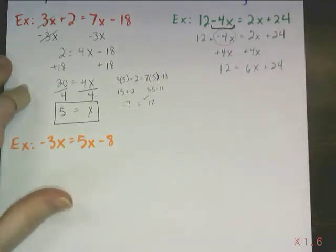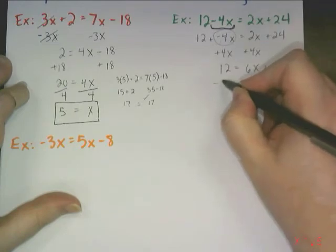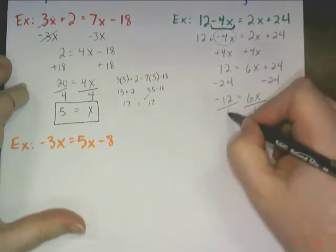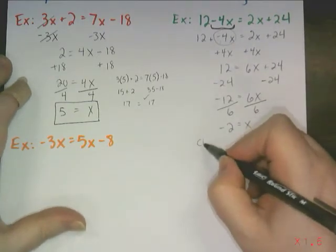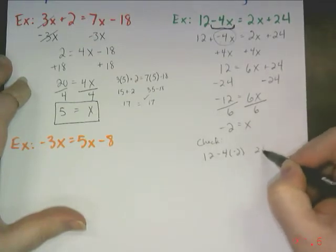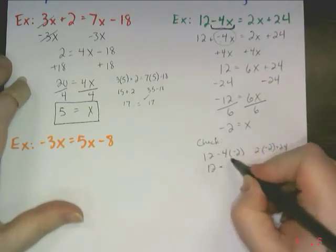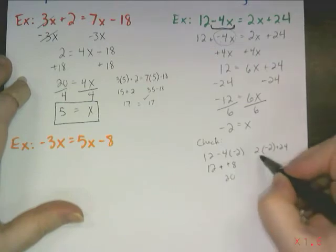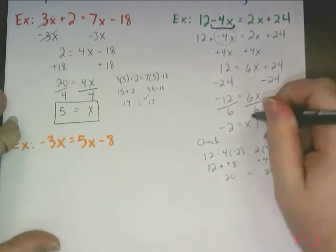And again, now I have a two-step equation, so it should be a little bit more obvious what I need to do to solve. I need to undo the addition by subtracting. Giving me negative 12 equal to 6x. Then undo the multiplication by dividing. So, negative 2 is equal to x. I can check that. 12 minus 4 times negative 2. And 2 times negative 2 plus 24. Well, 12 minus 4 times negative 2 is a negative 8. Oh, but minus a negative becomes plus and I get 20. 2 times negative 2 is negative 4 plus 24. That also equals 20. It all equals out. Everything's good. My answer is correct.